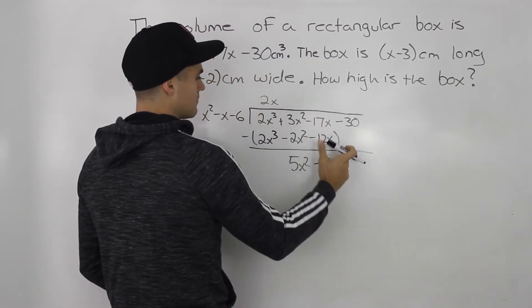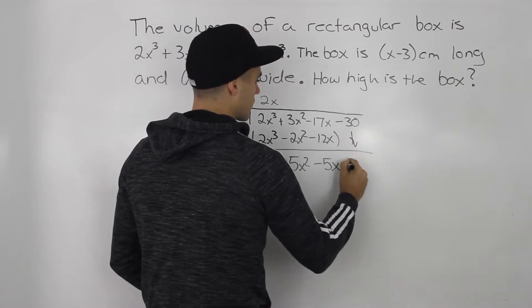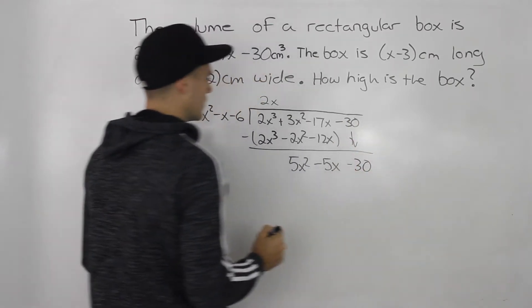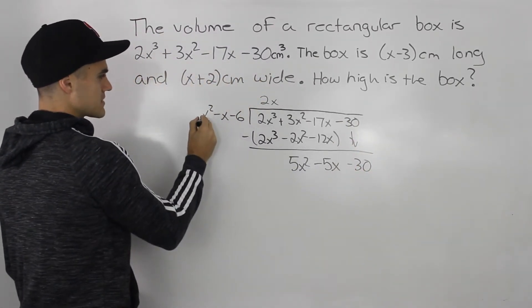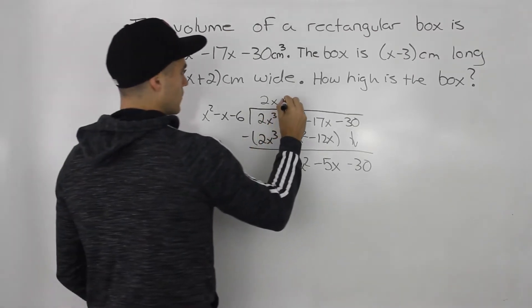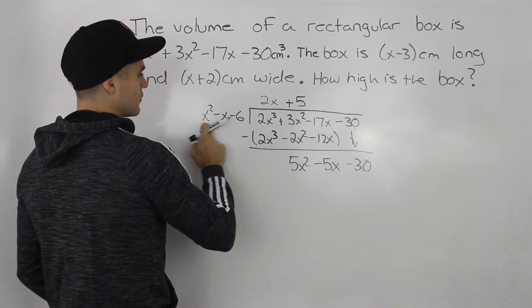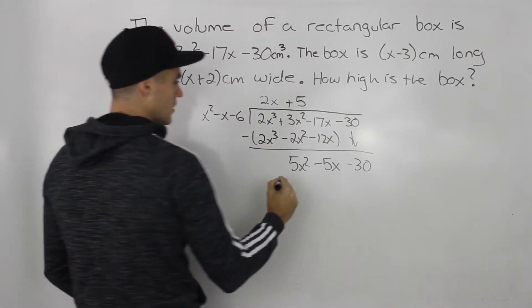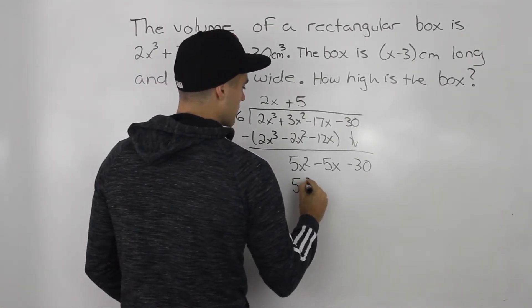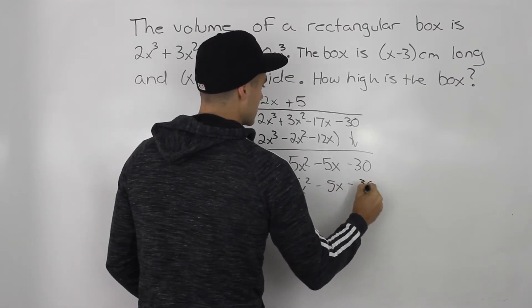And then -30 minus 0. We could just bring down this -30 here. All right, so now how many times does x² go into 5x²? Well, 5 times. So when we multiply the 5 with all the terms in the divisor, we end up getting 5x² - 5x - 30.